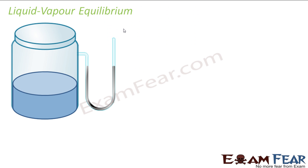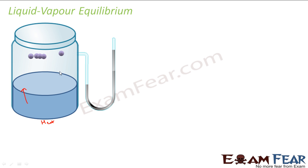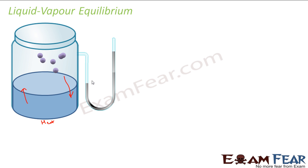For liquid-vapor equilibrium, suppose we have a jar of water and we apply a little heat. The molecules will evaporate and go up; after some time the pressure will build up, and molecules will start moving in both directions at the same rate. The rate of evaporation becomes equal to the rate of condensation — and that is equilibrium: rate of evaporation equals rate of condensation.